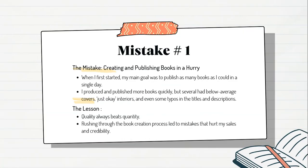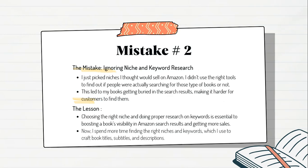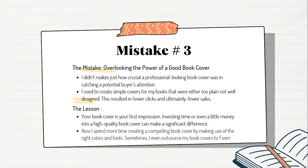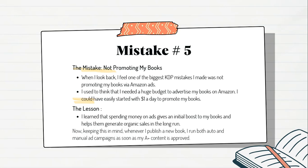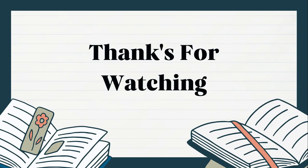So those were the five biggest KDP mistakes. Let's recap: creating and publishing books in a hurry, ignoring niche and keyword research, overlooking the power of a good book cover, not understanding trim sizes, and not promoting my books. I hope you find this video useful. If you want more details on the KDP mistakes I made during the early days of my self-publishing journey, you can read the article linked in the description. Thanks for watching — see you in the next video.